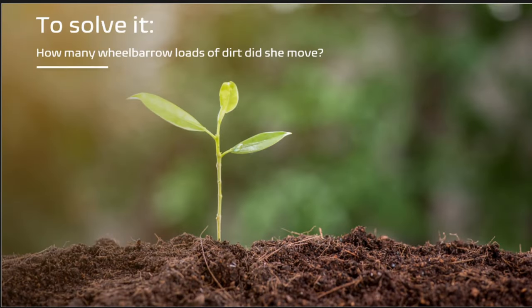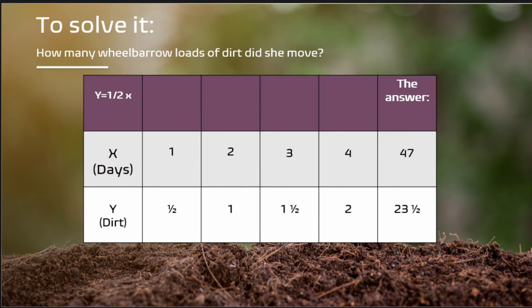So how do we solve this — how many wheelbarrow loads of dirt did she move? I found the pattern, which was y equals one-half x, where x is days and y is the amount of dirt. Substituting 1 for x and multiplying by one-half gives one-half. Substituting 2 gives one. Substituting 3 days gives one and a half. Four days gives two. And the answer, after substituting 47 days, is 23 and a half wheelbarrow loads full.